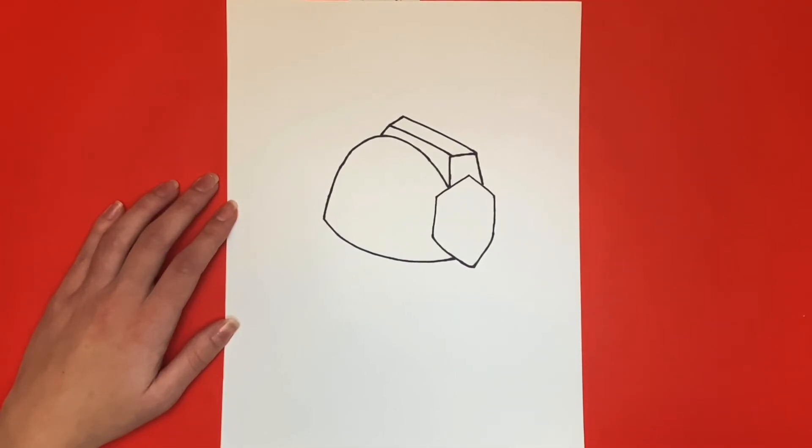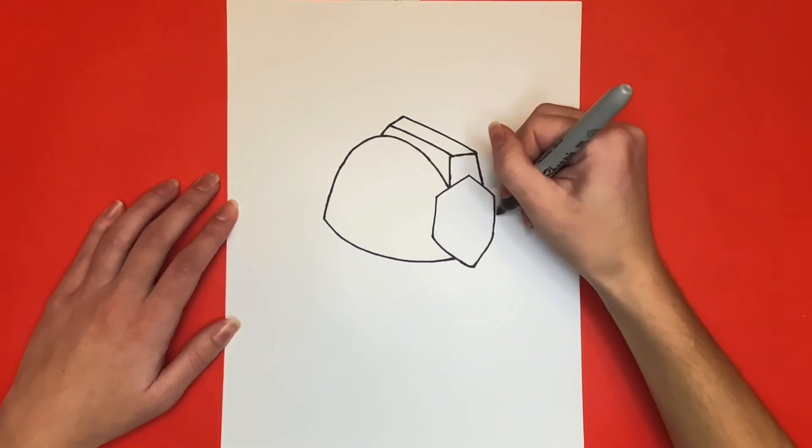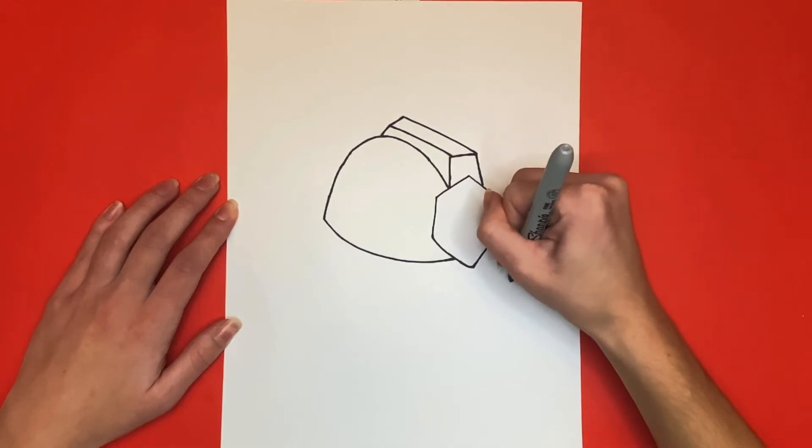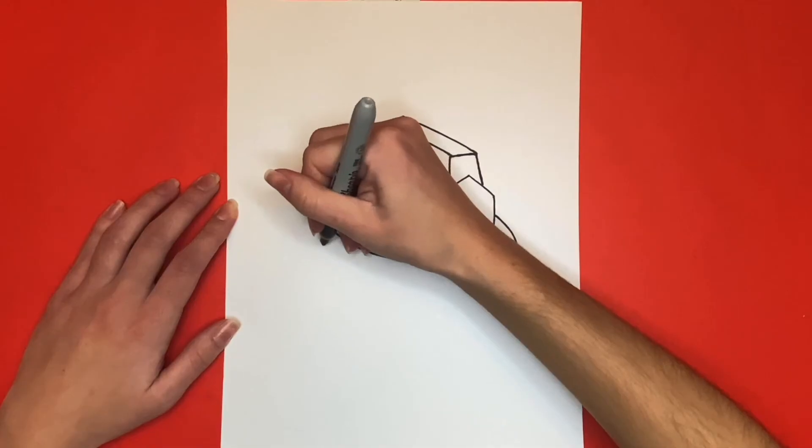We're almost done! Now we're going to draw the rim of the hat. This will be a big curved line starting towards the right of the front piece that comes all the way down and around towards the back side of the hat.